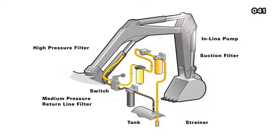After doing its work, the hydraulic oil proceeds back to the holding tank. It first passes through the medium-pressure return line filter, which removes contaminants generated during component activity.